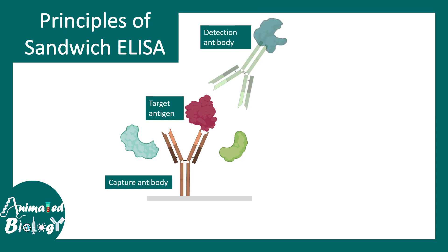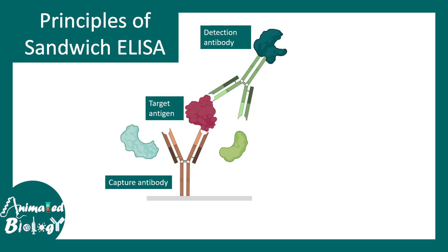The second part is the detection antibody. Most often this detection antibody is enzyme-linked. In cases where there are no conjugated antibodies, one can use the combination of a primary antibody and then an enzyme-linked secondary antibody. This detection antibody detects another epitope on the target antigen. Then substrate is provided and a product is formed.